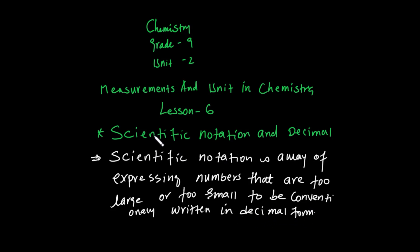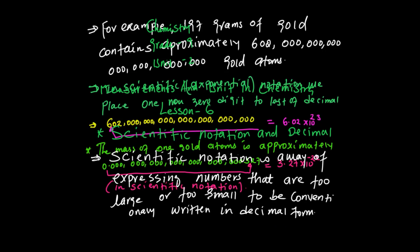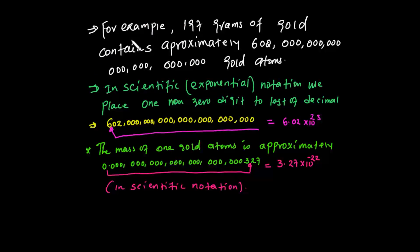Scientific notation means it is a way of expressing numbers that are too large or too small to be conventionally written in decimal form. Scientific notation is used when expressing numbers that are too large to be written out normally — that is what we call scientific notation.